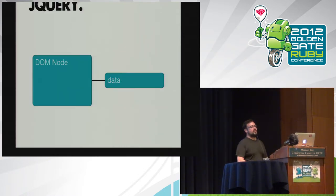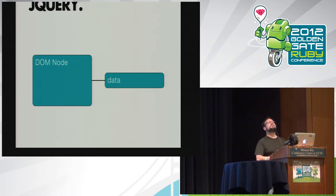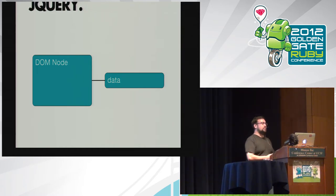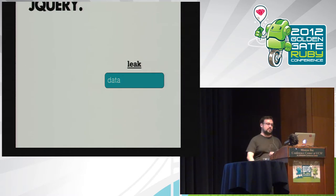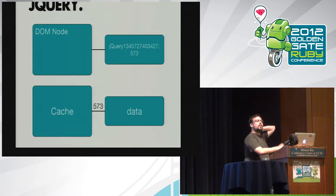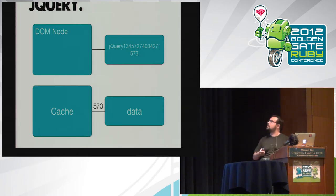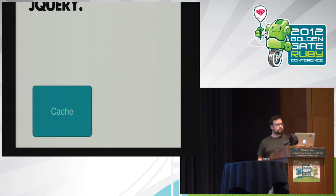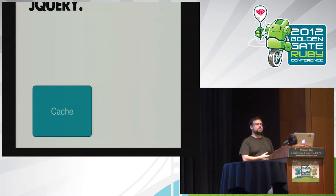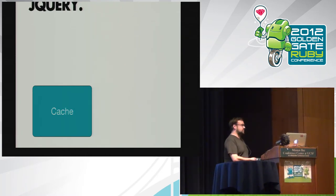Here's an example from jQuery. You have a DOM node and you want to put some data on it. It turns out IE has a memory leak that will never be fixed in IE6: if you put some data on a DOM node and then remove the node, the GC never collects it. So what does jQuery do? jQuery says: we can put a number on the DOM node — numbers don't cause garbage — and then we create a separate cache that maps that number to the data. When you remove the node, you always go through jQuery to make sure to clear it.